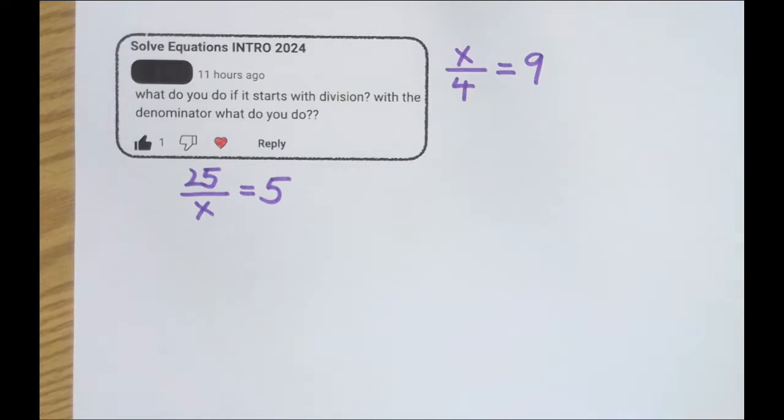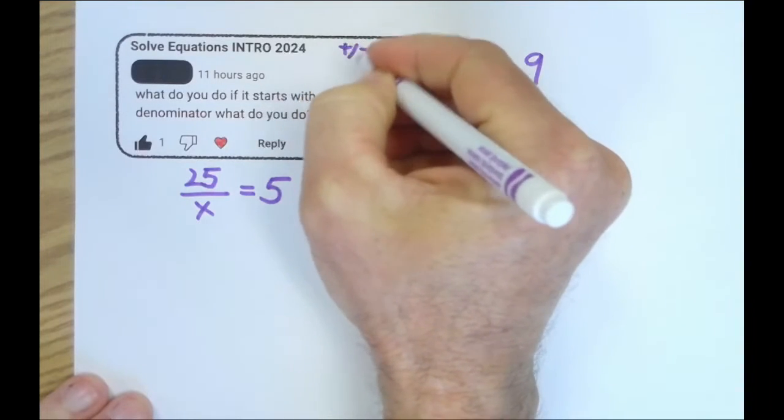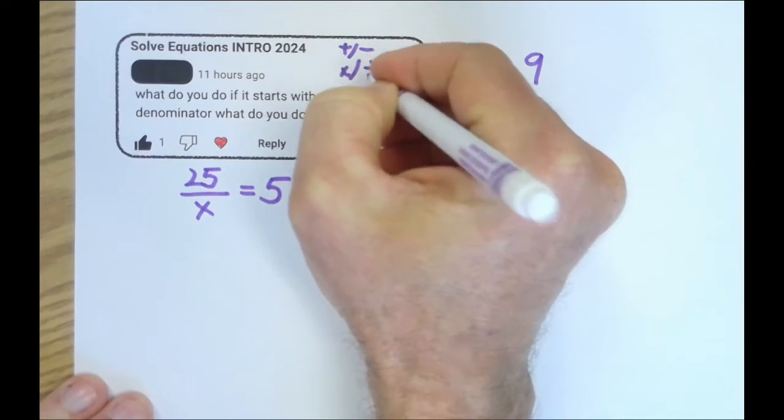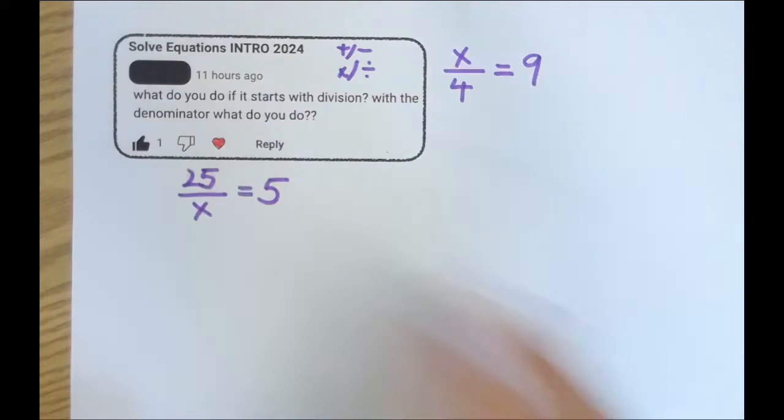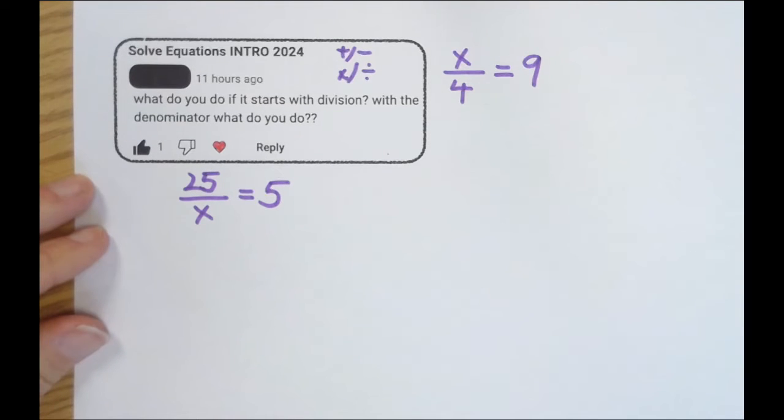I introduced the concept of inverse operations just at a very basic level as a strategy for solving single variable equations. And the question came in, thanks for watching, I'm protecting your identity. What do you do if it starts with division, with the denominator? What do you do?